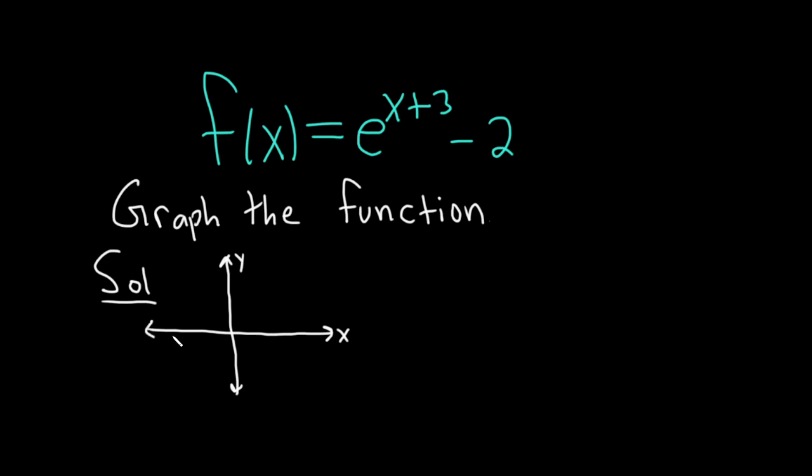And e^x has a horizontal asymptote at zero. So the line y = 0 is a horizontal asymptote for the graph of e^x, and it would look something like this. It grows very rapidly. And this point here is 1.